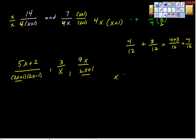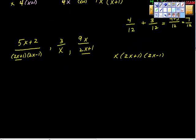So it would be x times 2x plus 1 times 2x minus 1. I'm going to go through tons and tons of examples of this. Let's look at just one more. Hopefully this will be really helpful.